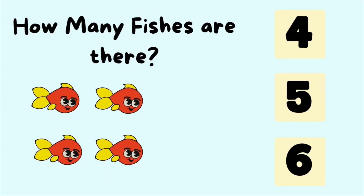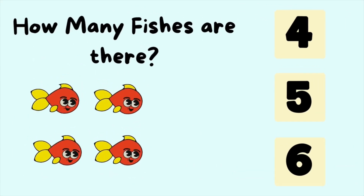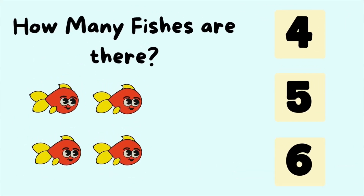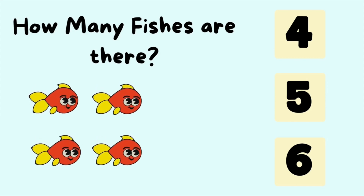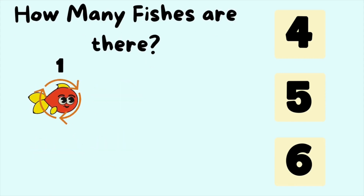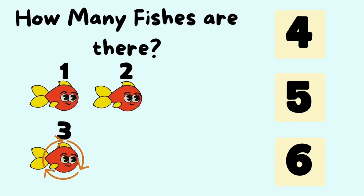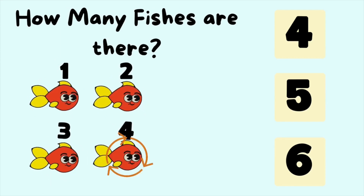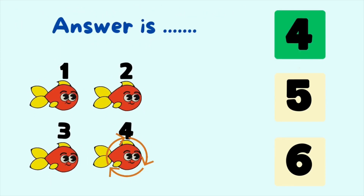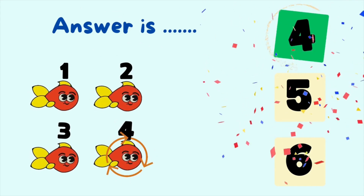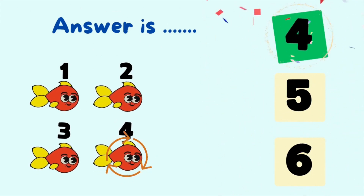How many fishes are there? Let's count the number of fishes. It is one, two, three, four fishes. So the answer is four fishes.